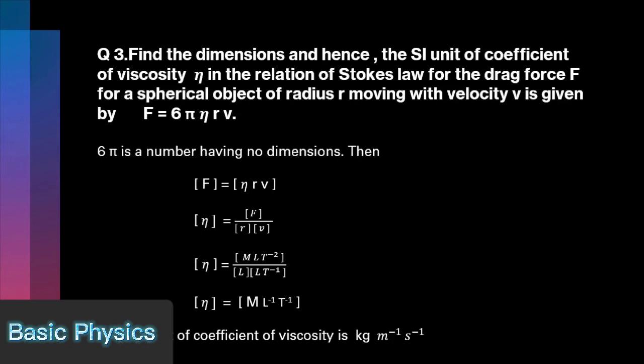Then F is equal to eta R V, and eta is equal to F by R V. Put the dimensions of force, radius and velocity. The eta has dimensions of [M L^-1 T^-1]. The SI unit of coefficient of viscosity is kg per meter per second.